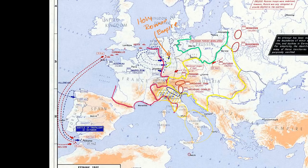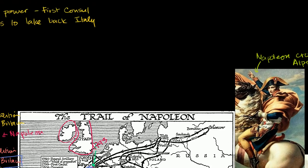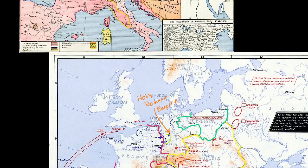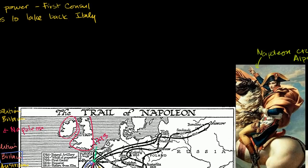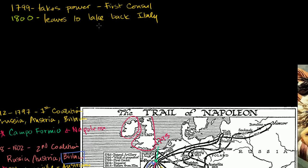So Napoleon crossing the Alps in 1800 ends the Second Coalition. In 1801, you had your Treaty of Lunéville — end of the Second Coalition. They don't have a treaty with Great Britain until the next year, really just out of attrition, but that doesn't matter — it was a very short-lived treaty.